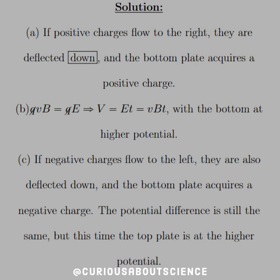And Part C: if negative charges flow to the left, they are also deflected downward, and the bottom plate acquires negative charge. The potential difference is still the same magnitude, but this time the top plate is at a higher potential. So we just switch sides, switch directions, and you're good to go.